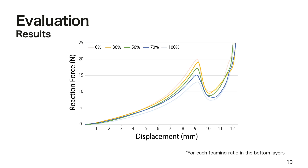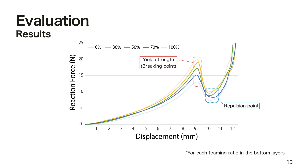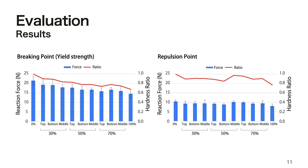The resulting force-displacement curves for each foaming ratio in the bottom layers are shown here. Initially, the gummy is in elastic compression and enters plastic deformation after it breaks at its strength. Beyond the repulsion point, the gummy exhibits elasticity again. Overall, the more layers containing foam, the smaller the breaking point, and the gummy becomes softer and easier to break.